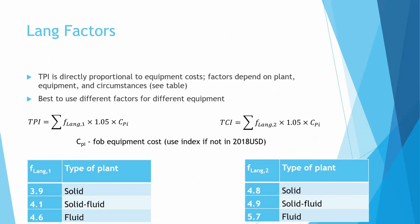Another way of doing this is the LANG factors. You can either estimate the total permanent investment or the total capital investment. This has to do with a LANG factor. If your type of plant deals with solids or with fluids or with solid-fluids, this will change. It's multiplied by another factor of 1.05, and this is multiplied by an equipment cost for whatever pieces of equipment you have. You can get either the TCI or the TPI.